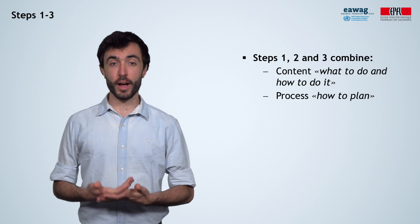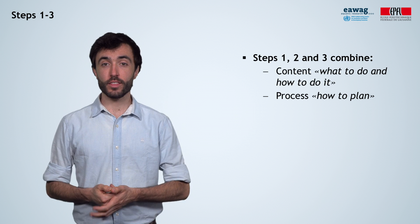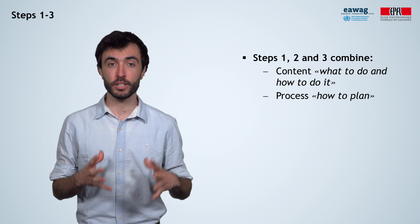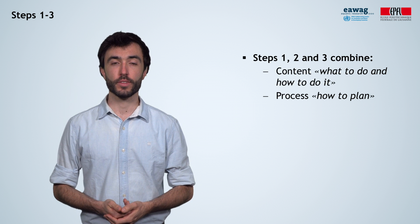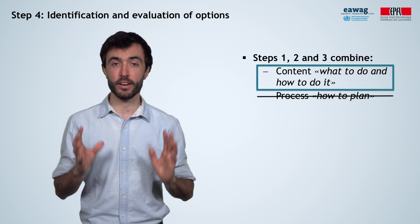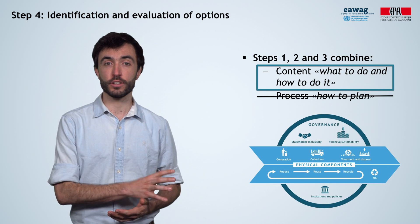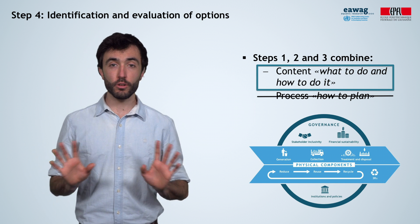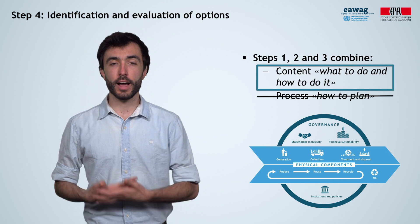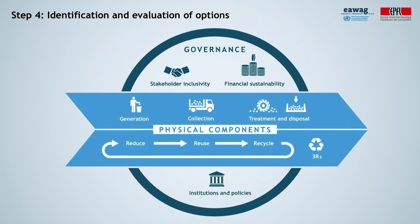So far, the steps have combined information and guidance on both the content of each step — the what to do and how to do it — with the process of the municipal solid waste management strategic plan development. Step 4 only focuses on the content, since its purpose is to identify and evaluate the practical options available for addressing each of the components of the integrated sustainable waste management framework. Your team needs to come up with alternatives for all the physical components, which consist of generation, collection, treatment,